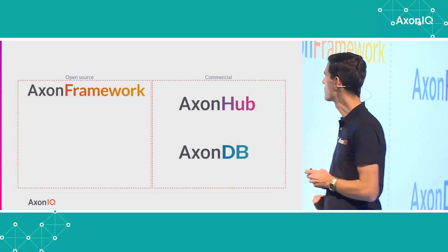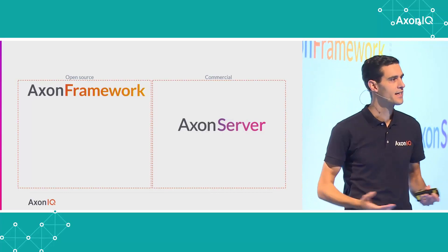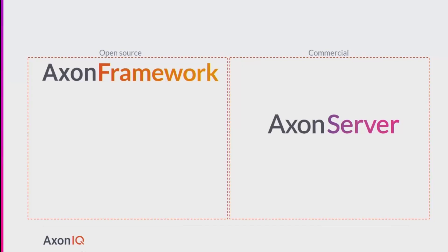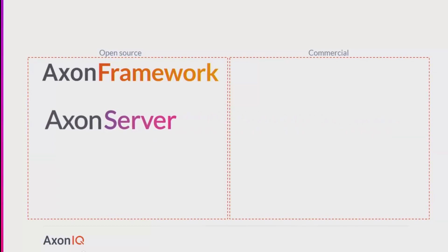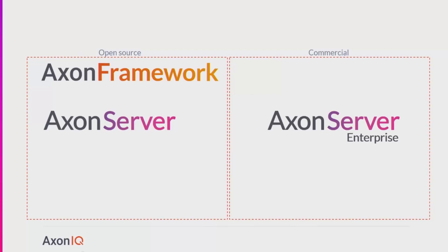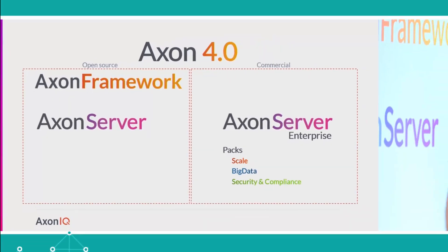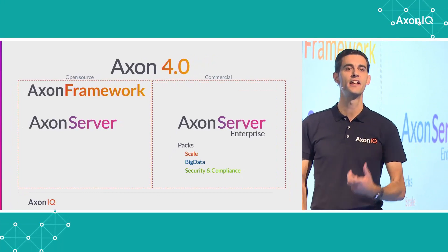We had Axon Framework open source, and we had Axon Hub and DB commercial. As of today, I can announce that these products have been merged — we call it Axon Server. It's the server component that gives you the server-side features Axon Framework needs to scale. We have decided to open source Axon Server as well, and the open source version is usable in a production environment. We also noticed the current offerings of multiple editions was rather complex, so we want a simpler structure with a few packs you can pick and choose, providing additional features for specific situations. This is going to be the default in Axon 4, which is much more about giving you actual scalability — not just the ability to scale, but making it a lot easier to actually do so.